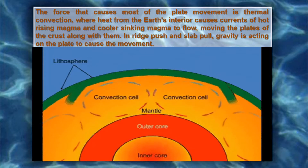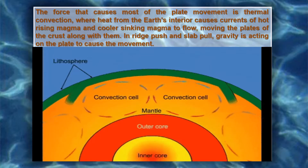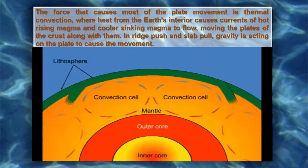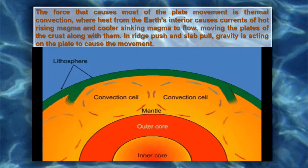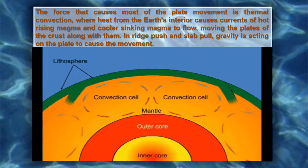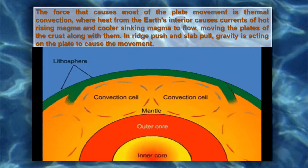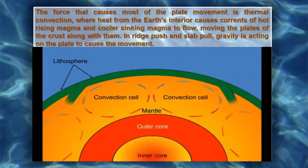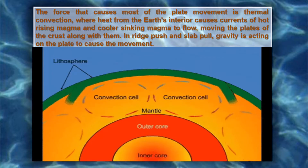The force that causes most of the plate movement is thermal convection, where heat from the Earth's interior causes currents of hot rising magma and cooler sinking magma to flow, moving the plates of the crust along with them. In ridge push and slab pull, gravity is acting on the plate to cause the movement.